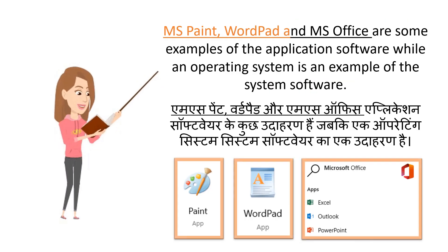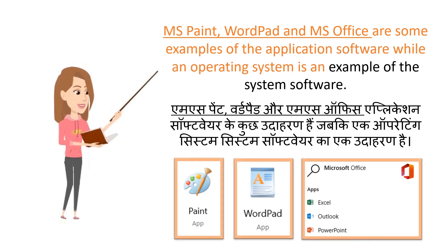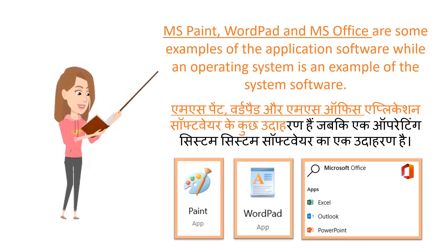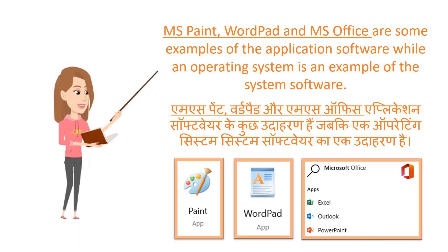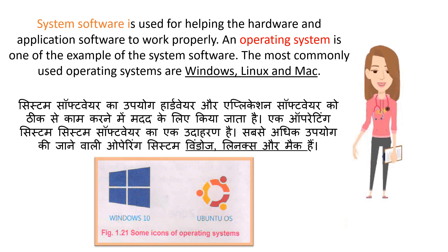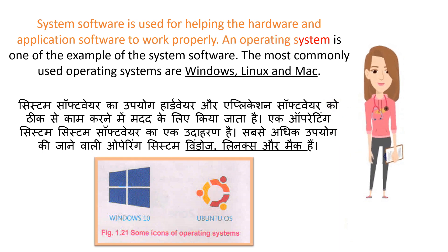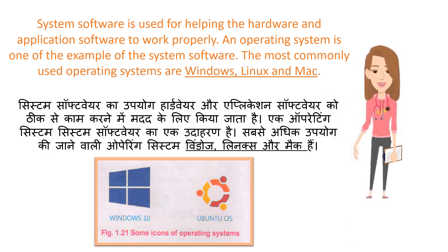MS Paint, WordPad, and MS Office are some examples of application software, while an operating system is an example of system software. System software is used for helping the hardware and application software to work properly. An operating system is one example of system software. The most commonly used operating systems are Windows, Linux, and Mac.